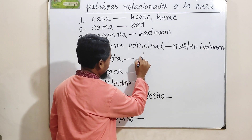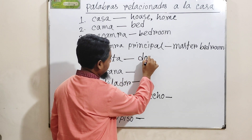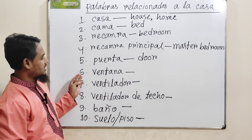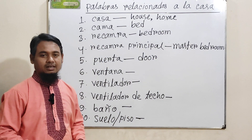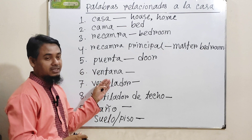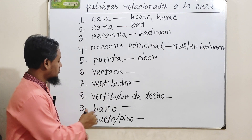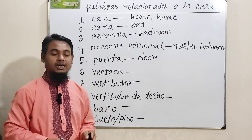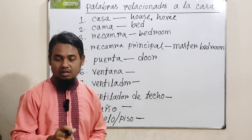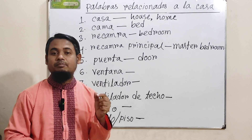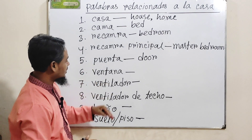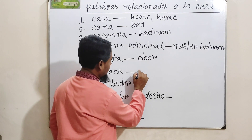Número seis: 'ventana'. Not 'bentana' — it is 'ventana', because this letter is 'uve' and it is pronounced like 'v', not 'b'. So it is 'ventana', not 'bentana'. Ventana means 'window'.